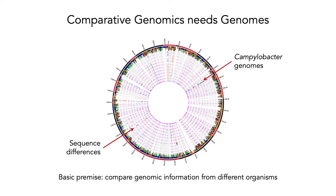The first thing to note is that comparative genomics needs genomes — you need to have lots of genomes to compare in order to really get at its power. What we're looking at here is a series of genomes of a bacterium called Campylobacter, a pretty nasty bug that can make you quite sick. The outside ring is the main reference genome, and all those circles in the middle show different strains of the same species, with the little bumps indicating sequence differences between strains.